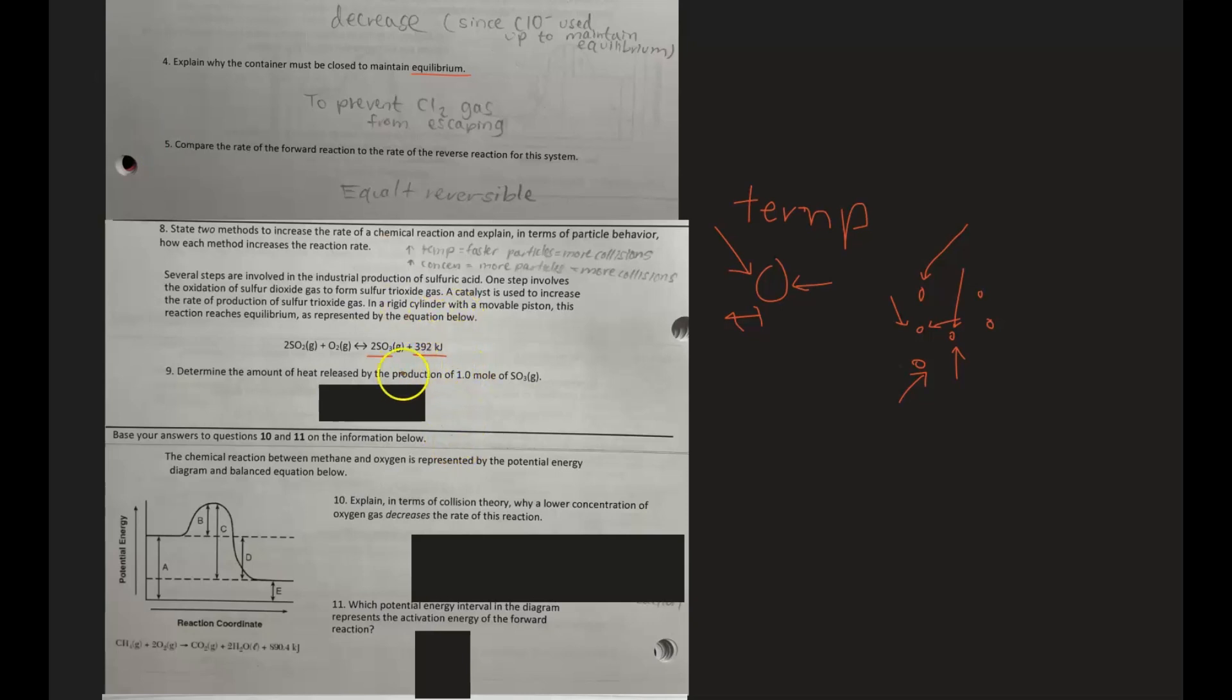So what happens if we only have one mole of SO3? Well, this 392 would just be halved to make up for that, and so we get 196 kilojoules.